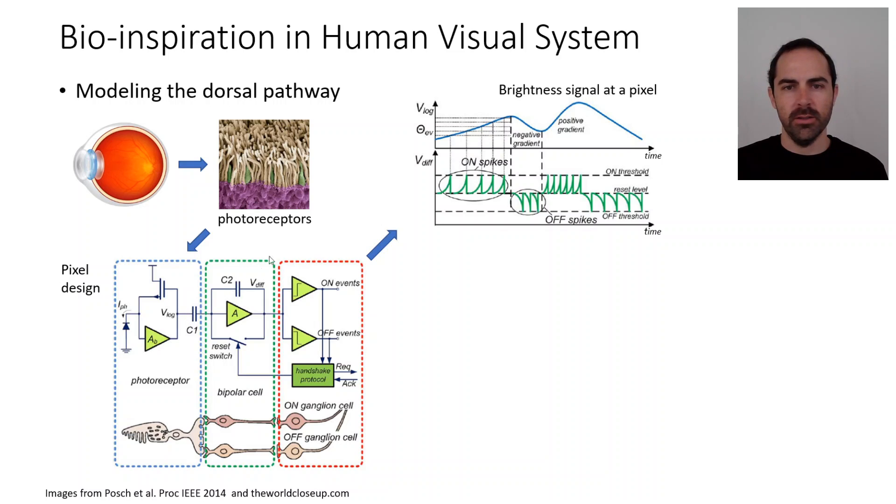This second stage is integrating light, and as soon as light accumulated crosses the threshold, which is given by these comparators, the on comparator, then it's reset and a spike is sent. These are on spikes because they detect brightness increase. There is a brightness increase, then it resets, brightness increase triggers an event, resets, and so on.